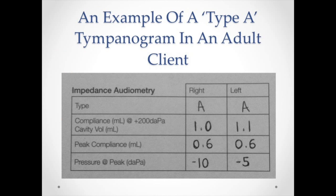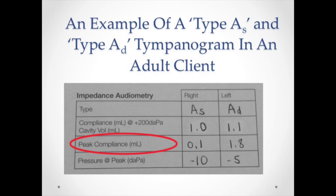A type A tympanogram suggests that the client's middle ear system is functioning normally; they are unlikely to have a conductive component to their hearing loss. A type As tympanogram indicates reduced middle ear mobility, whereas a type Ad indicates increased middle ear mobility.